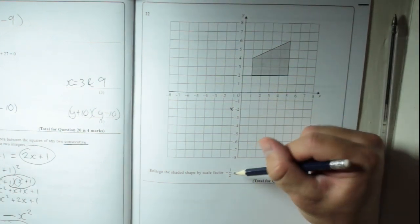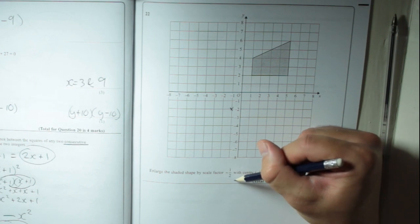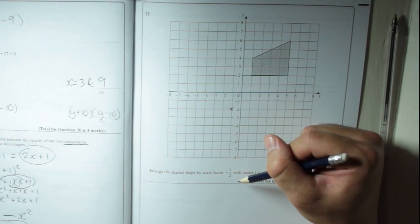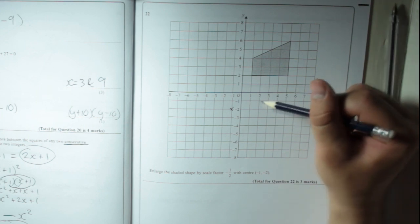So if the scale factor is minus a half, that means every distance has to be halved but also go in a different direction. I'll show you what I mean.